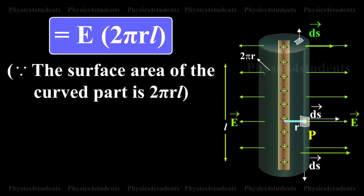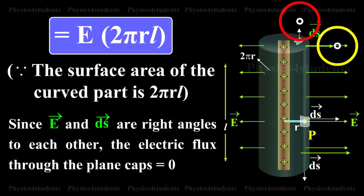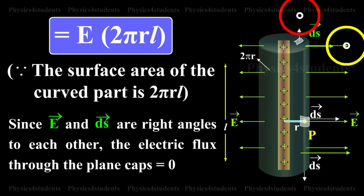The surface area of the curved part is 2 pi rl. Since vector E and vector ds are at right angles to each other, the electric flux through the plane caps equals 0.